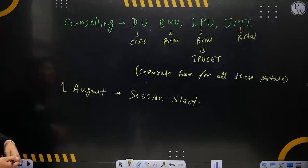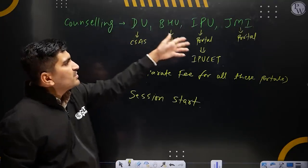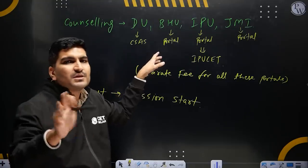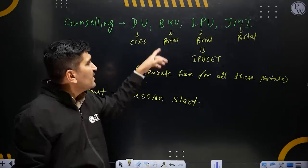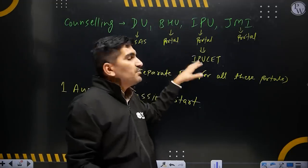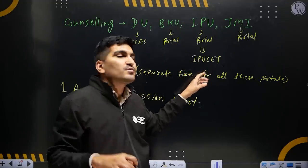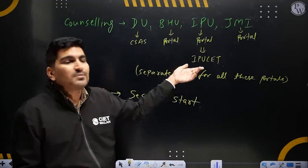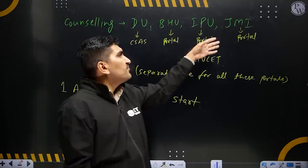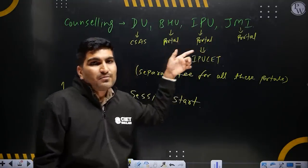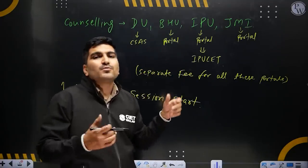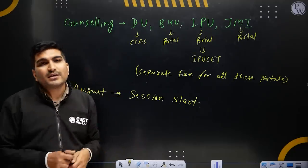The counseling will be through different portals — DU, BHU, IPU, and JMI. DU has its own portal, and CSAS will start on June 20th. BHU has its own portal. IPU has been taken into CUET but previously had its own exam. After JMI, which was on April 20th, you will get a separate CSAS form for these universities.